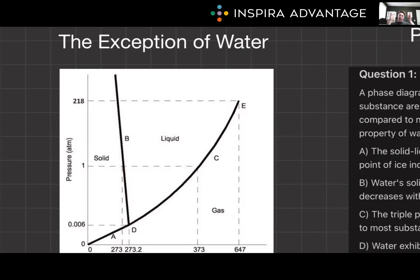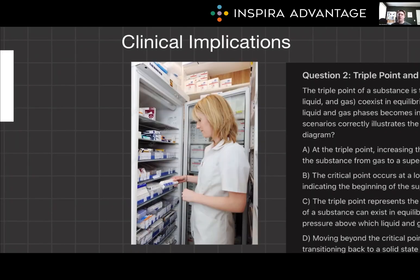The sharp ice skate redistributes your weight onto a tiny sliver of surface area. This greatly increases the pressure, causing the ice to turn into a liquid, allowing for easy gliding across the ice. There are also clinical and environmental implications you should be aware of for the MCAT. Understanding the behavior of water under different pressures and temperatures is crucial for designing efficient heating and cooling systems. Similarly, knowledge of how substances transition between phases at specific temperatures and pressures is vital for the storage and handling of various chemicals and pharmaceuticals.